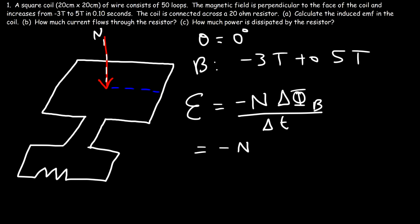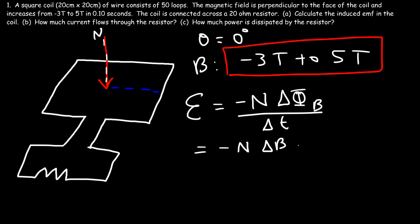In this example, what is changing: the magnetic field, the area, or the angle? The magnetic field is changing while the area and angle are constant. So we can write the change in flux as Delta B times A times cosine theta, where only B needs the delta symbol because that's the only quantity changing, divided by the change in time.